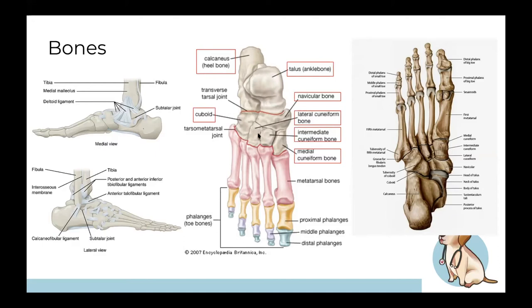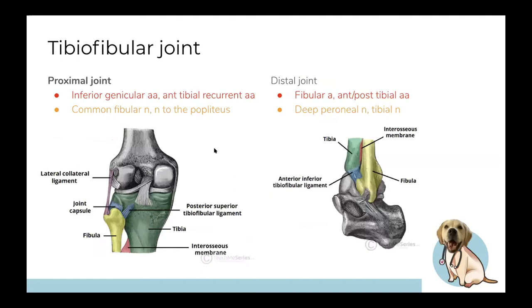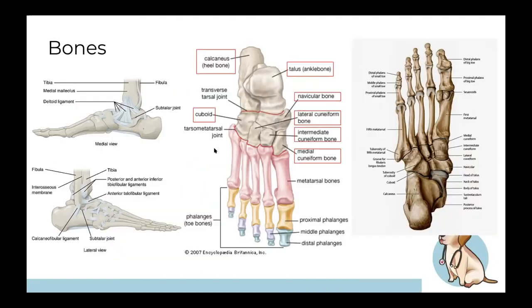The tarsals start with the medial, intermediate, and lateral cuneiform bones — don't confuse intermediate and medial, intermediate is in the middle. Lateral to that is the cuboid, shaped like a cube. Behind these is the navicular bone, meaning boat-shaped. Then the calcaneus — your heel — and the talus — your bony ankle.